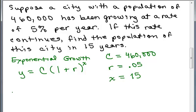So those are our variables. So we want to plug that in to the formula. 460,000 times 1 plus 0.05 to the 15th.